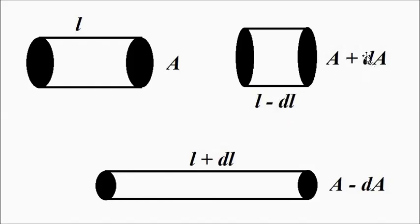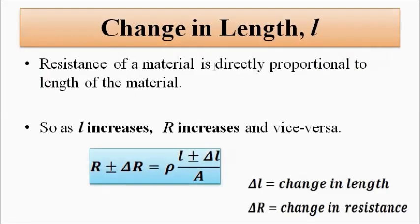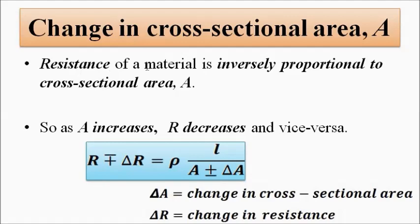Both change in length and change in cross-sectional area give rise to change in resistance. When there is a change in length, since resistance is directly proportional to length, when length increases resistance increases, and when length decreases resistance decreases. Similarly, since resistance is inversely proportional to cross-sectional area, as area increases resistance decreases, and as area decreases resistance increases.